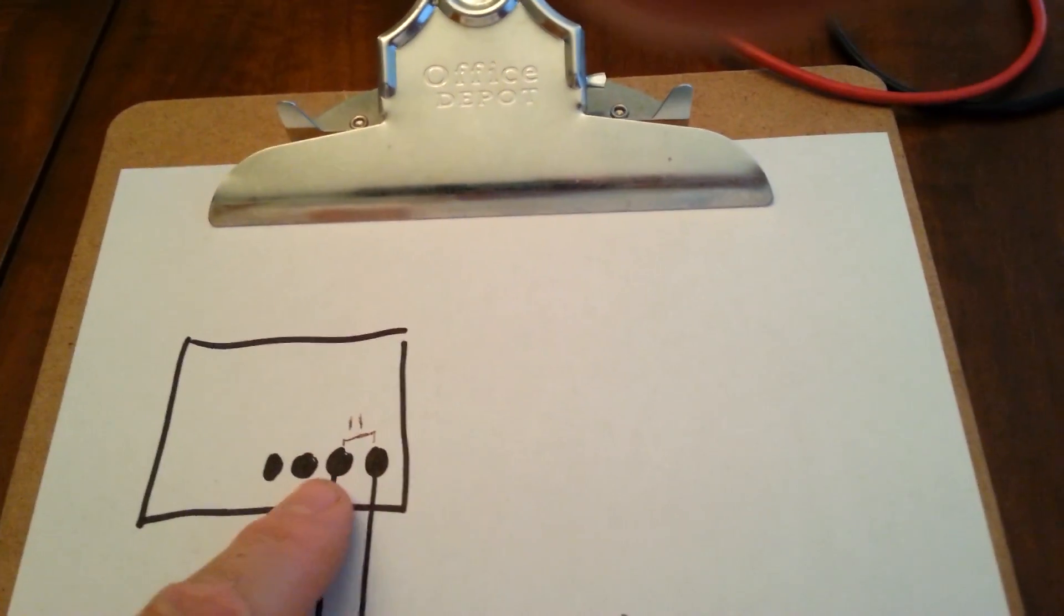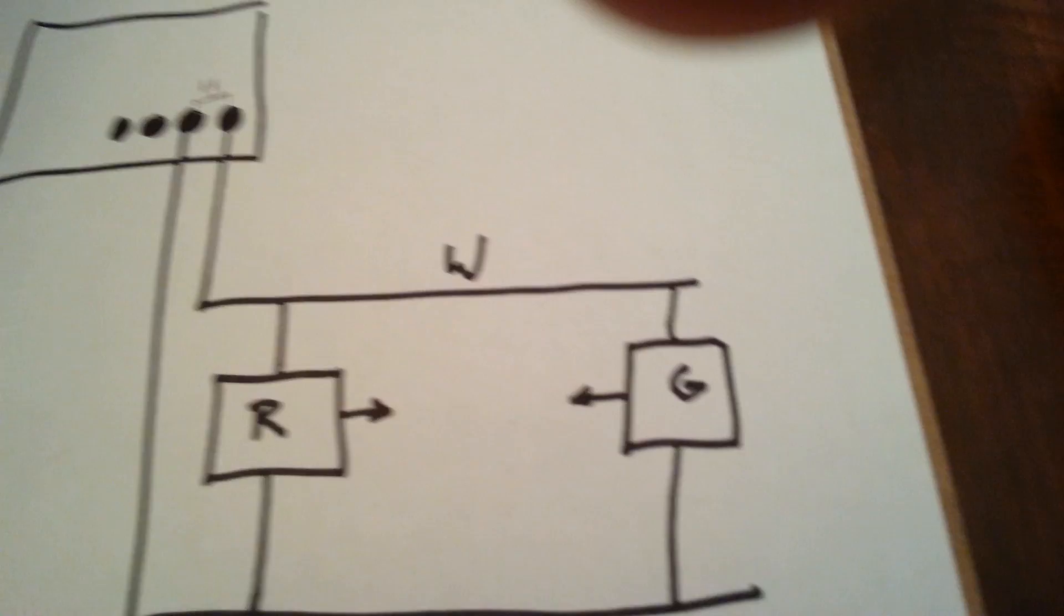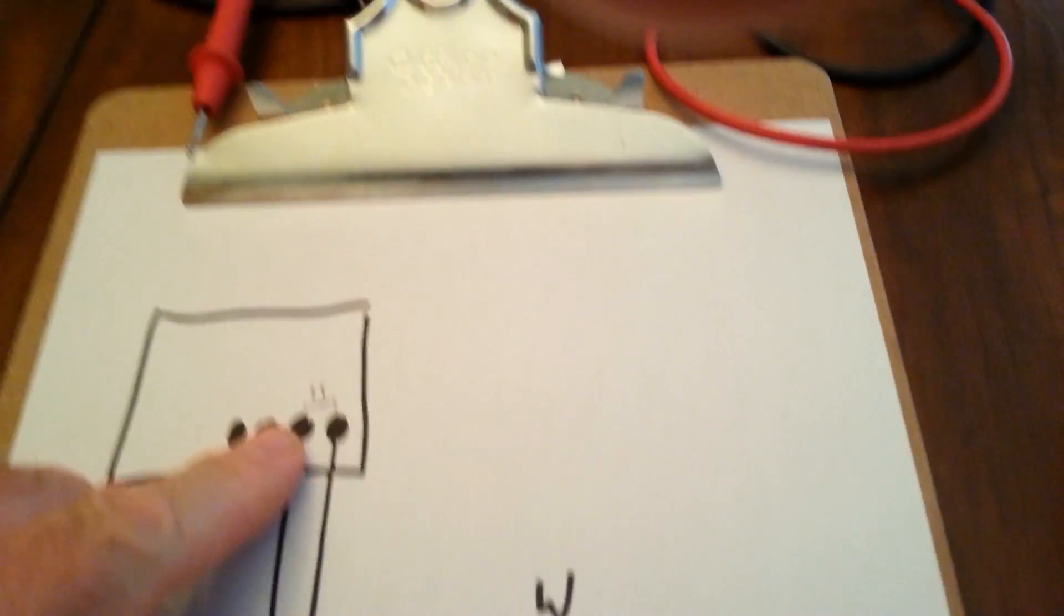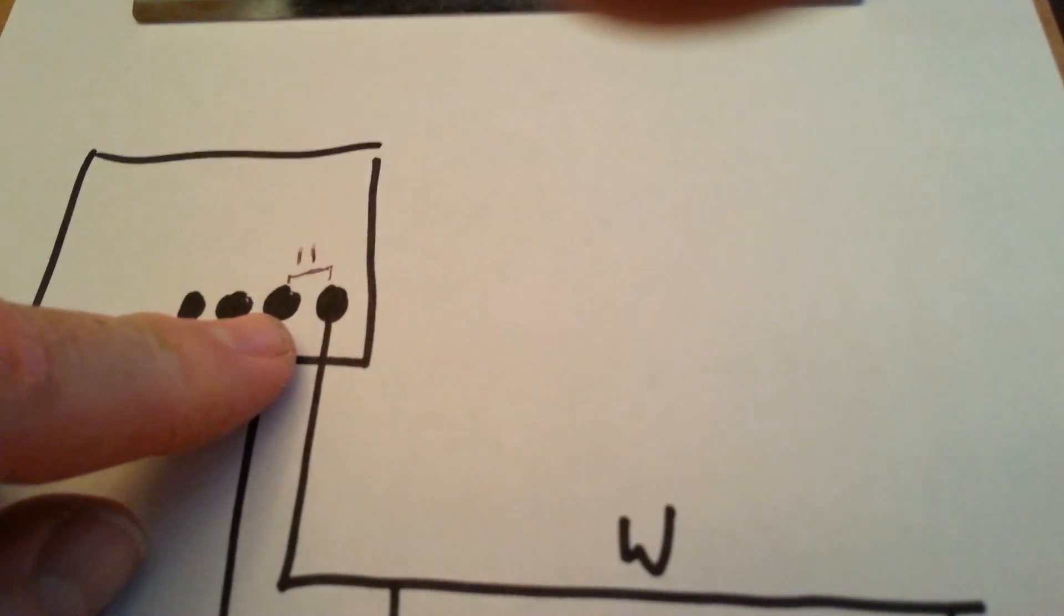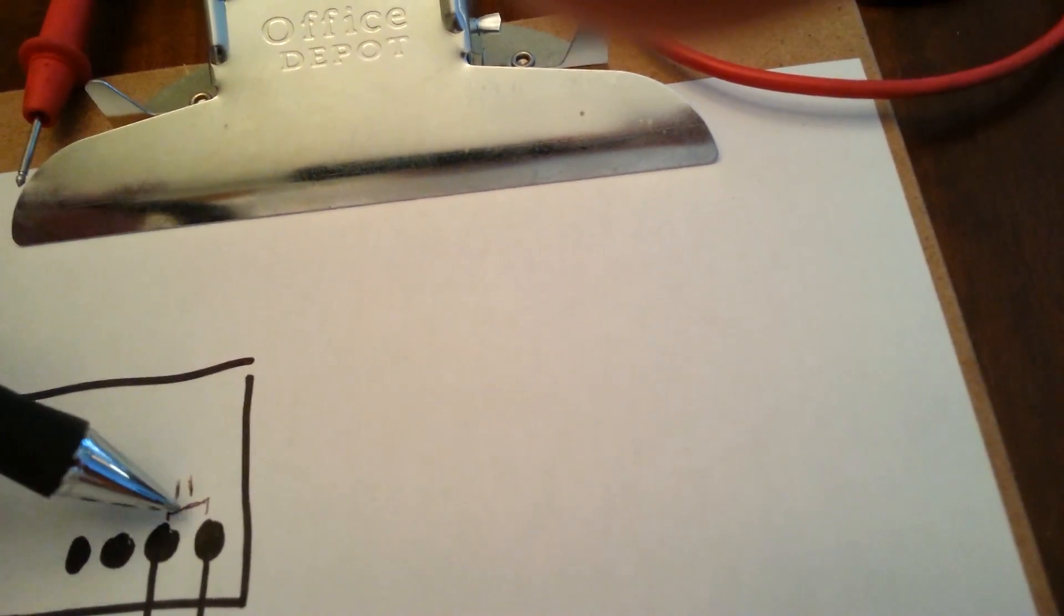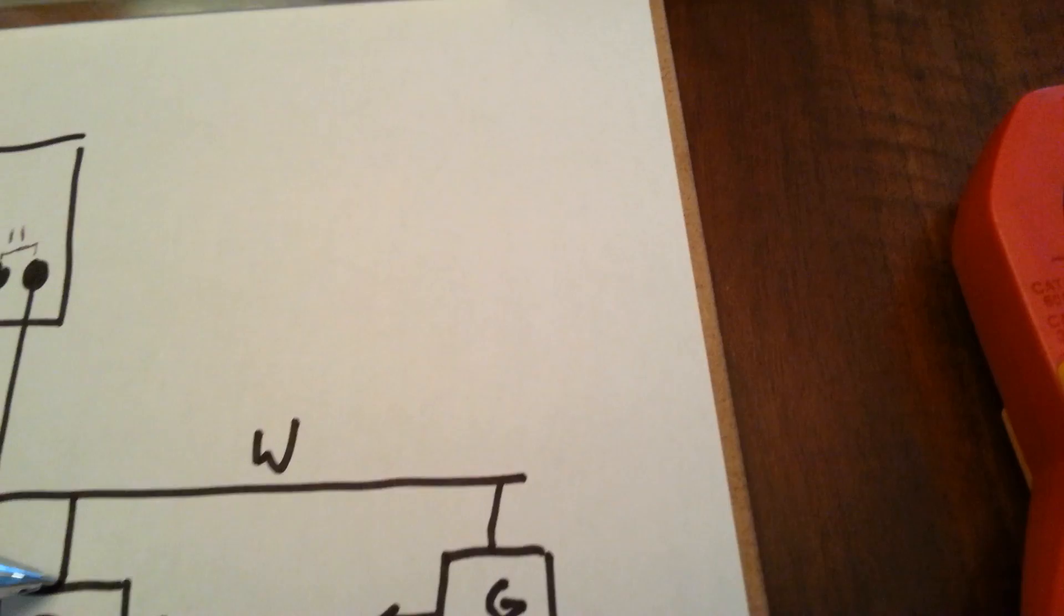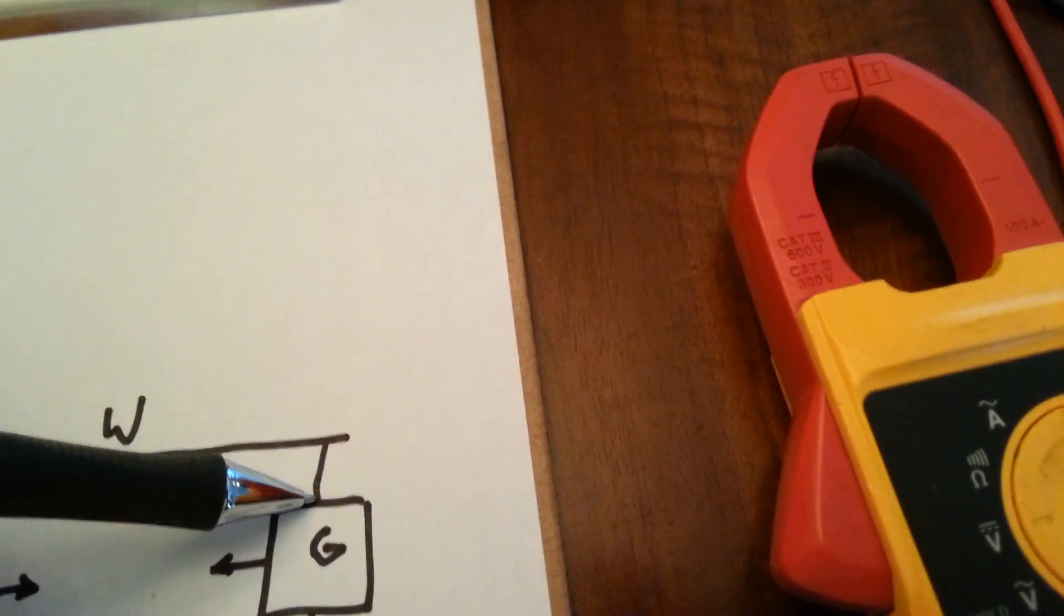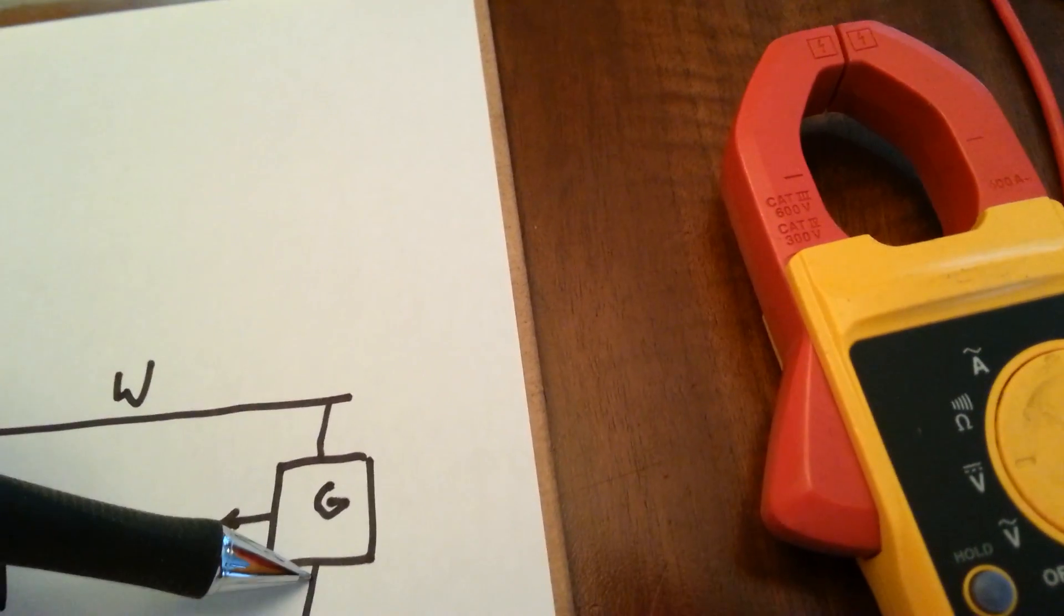Between these two contacts, I used my meter leads and touched one and the other across there with the meter set to volts DC and I was getting 11 volts DC across here. What that means is I should get 11 volts across here and 11 volts at the contacts on the green as well.